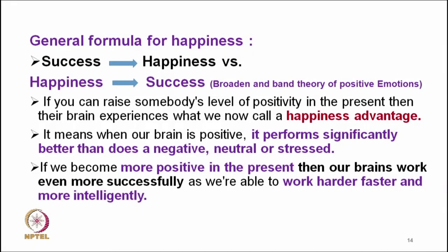When we talk about the general formula for happiness, our traditional style is that success leads to happiness. In recent research, researchers are focusing more on the idea that happiness leads to success. When we are happy, we are more productive, more creative, and facilitate positive interpersonal relations, and that is why these factors lead to success. You can correlate this easily with Broaden and Build theory of positive emotions, which we covered in the positive emotions chapter.